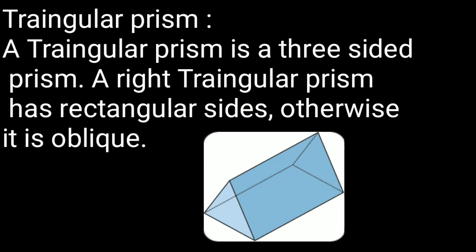Triangular prism: A triangular prism is a three-sided prism. A right triangular prism has rectangular sides. Otherwise, it is oblique.